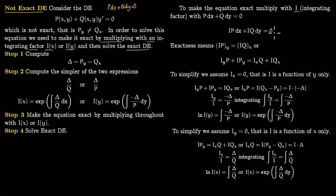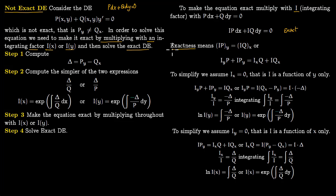After multiplying by I, the equation should be exact. Exactness means that the partial of I times P with respect to y equals the partial of I times Q with respect to x. Applying the product rule to both sides gives us expressions involving partial derivatives of I, which now need to be solved for I.